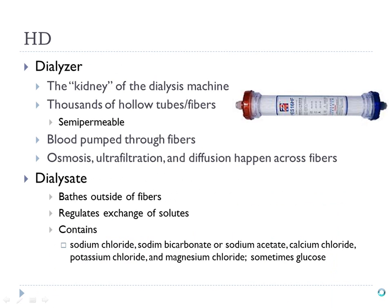The dialyzer is the kidney of the dialysis machine. Inside this tube are thousands of hollow fibers — tiny semipermeable tubes. The blood is pumped through all of those tubes, and the process of ultrafiltration and diffusion happens. All those toxins, electrolytes, urea, and creatinine that the kidneys normally remove are diffused across that semipermeable membrane.